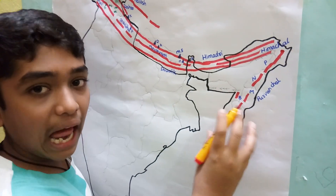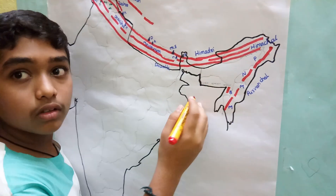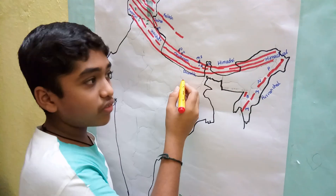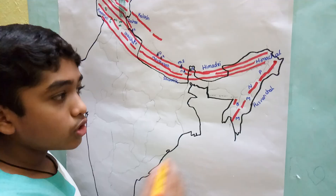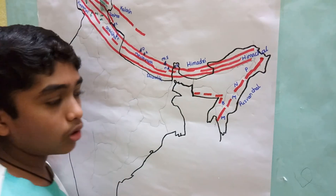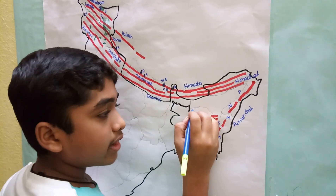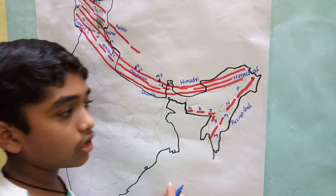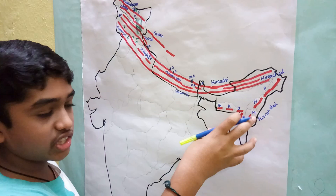In Purvanchal, we also find Barak valley (Shivalik Kachar) in Assam. In Meghalaya, we find three hills: Garo, Khasi, and Jaintia hills, which are also present in the northeastern region.